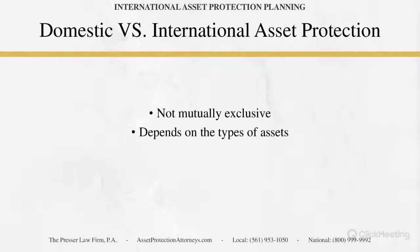Domestic planning might also involve owning assets in a jurisdiction where a husband and wife can own what we call tenants by the entireties, or holding assets inside exempt assets — such as retirement assets or ERISA qualified plans that are completely protected from creditors' reach — or homestead in a state like Florida or Texas where we have the ultimate homestead protection.